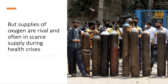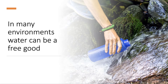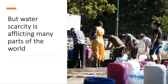India faced a huge oxygen crisis during the worst of the COVID-19 pandemic. In many environments, water can be a free good — those of you who do wild camping and take water from fresh running streams and rivers, that's essentially a free good. But water scarcity is afflicting many parts of the world. This picture was taken in Cape Town, South Africa, during a severe water shortage, when the supply of water to millions of households and businesses was under tremendous pressure.